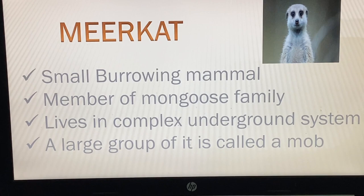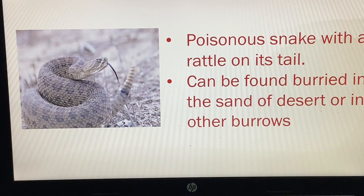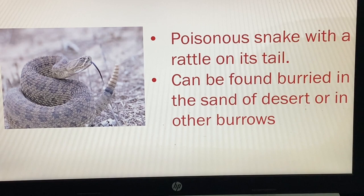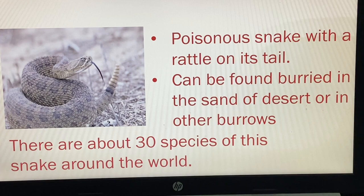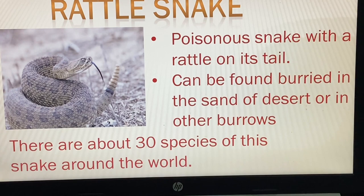This is a poisonous snake with a rattle on its tail. It can be found buried in the sand of the desert or in other burrows. There are about 30 species of this snake around the world. The name of this snake is the Rattlesnake.